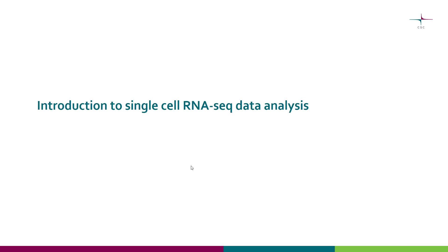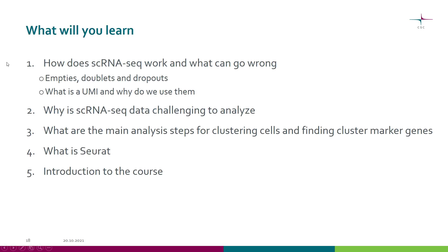This video is the first lecture of the course Single-Cell RNA-Seq Data Analysis with Chipster, and here I aim to give a brief introduction to single-cell RNA-Seq data analysis. We will look at how single-cell RNA-Seq works and what can go wrong in the process — what are empties, multiplets, and dropouts. You will also learn what a UMI is and why we use them. Then we discuss why this data is challenging to analyze and what the main analysis steps are for clustering cells and finding marker genes. Finally, I give a brief introduction to the course.